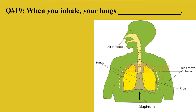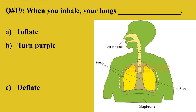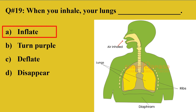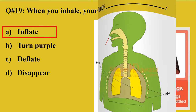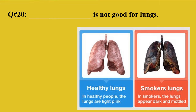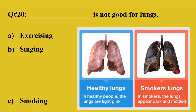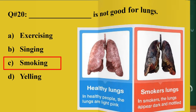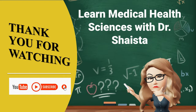Question 19: When you inhale, your lungs A: Inflate, B: Turn purple, C: Deflate, D: Disappear. The right option is A — when you inhale, the lungs inflate with air, just like a balloon. Question 20: Which among the following is not good for lungs? A: Exercising, B: Singing, C: Smoking, D: Yelling. The right option is C, smoking. Smoking contains harmful chemicals that cause lung damage — a healthy person's lungs are pink while a smoker's lungs are dark and mottled in appearance. Thank you for watching.